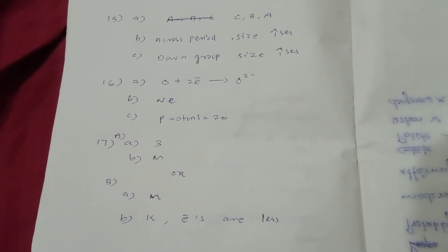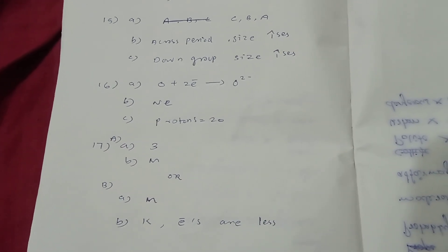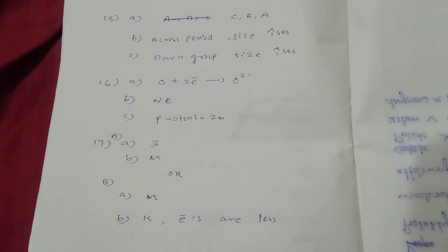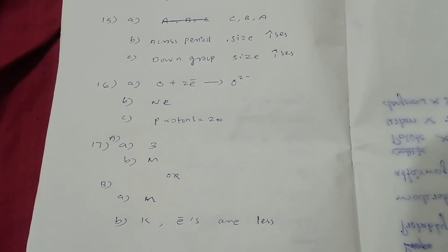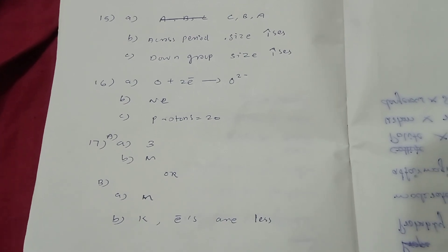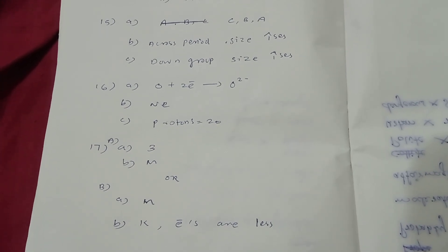Question number 16: A — Oxygen plus 2 electrons gives O2 minus. B — Neon. C — Proton 20.